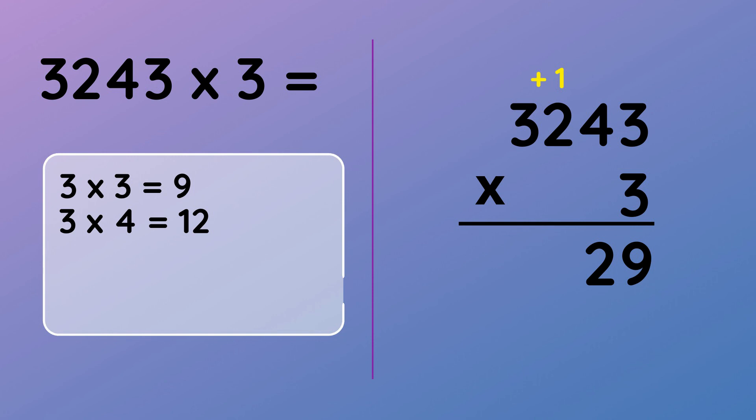Now we do 3 multiplied by 2 which is 6 but don't forget to add the one we just regrouped to give us 7. And lastly 3 multiplied by 3 gives us 9. Our answer is 9729.